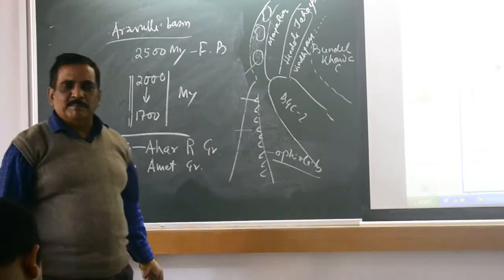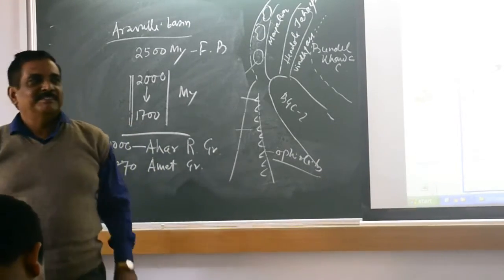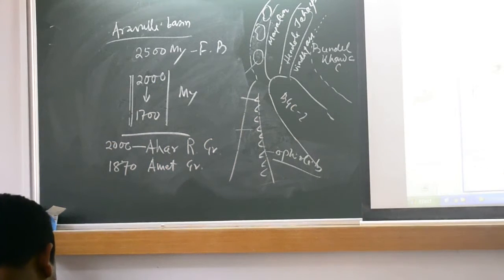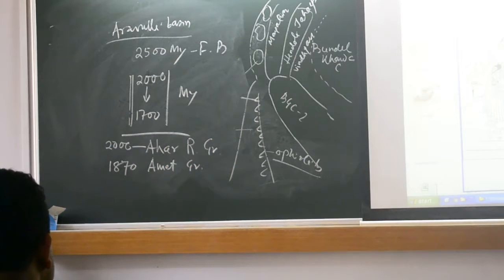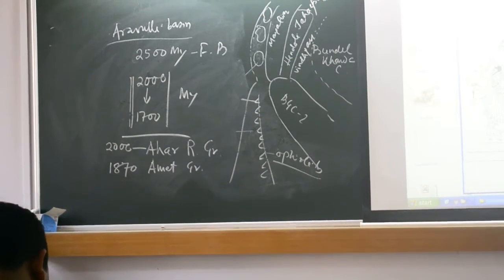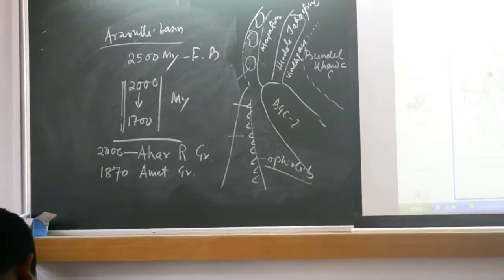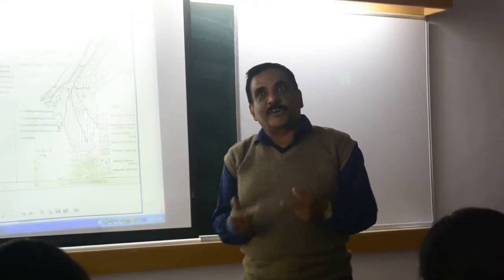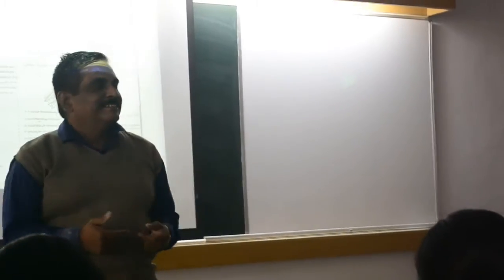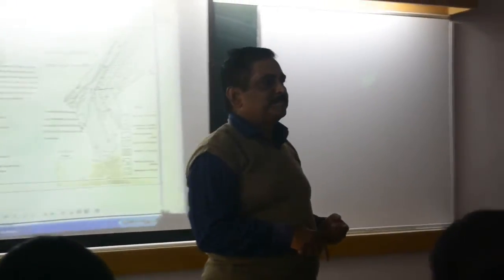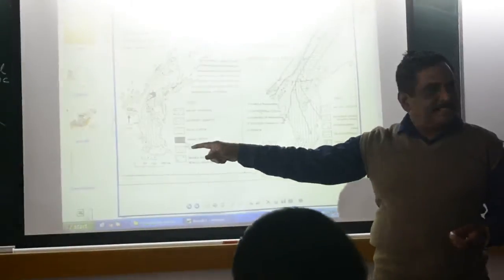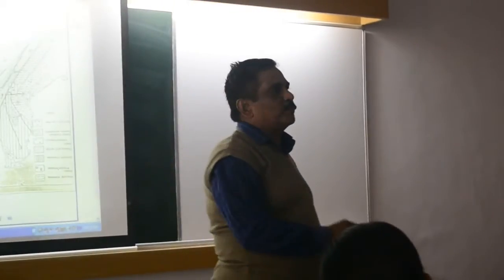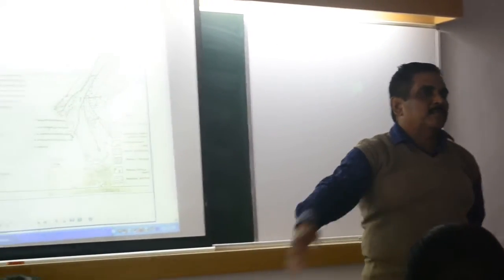Amet granite — very difficult to remember these ages at this stage. But if the question comes, you will be able to remember them. These granites are part of melting products of Aravali sediments. These are all locations near Udaipur — that is, Ahar river, very close to there.